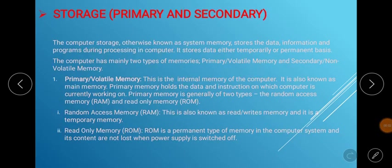Let us take a look at the storage units of the computer and their types. The storage unit is also known as system memory. It stores data, information, and programs during processing. It stores data either temporarily or permanently, and they are of two types: primary or volatile memory, and secondary or non-volatile memory.